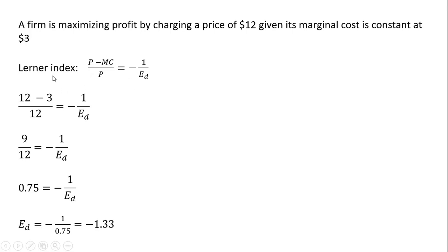So plugging in 12 for price, plugging in $3 for marginal cost, and then simplifying and solving for the elasticity of demand. The left hand side is 9 divided by 12 or 0.75. Multiplying through by the elasticity of demand (e subscript d) and dividing through by 0.75 leaves us with an elasticity of demand of minus 1.33.